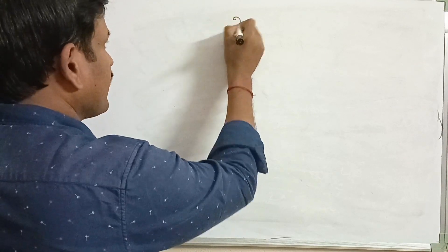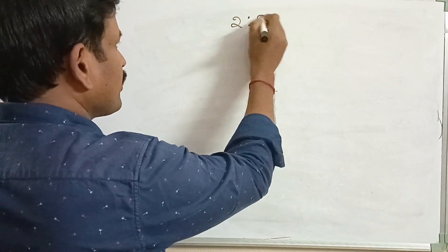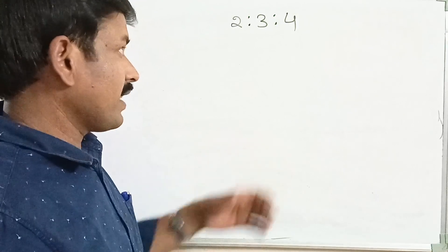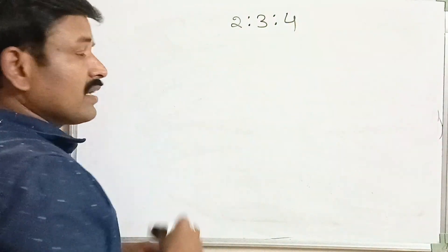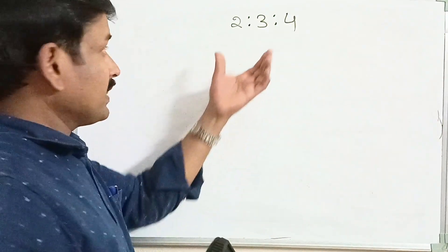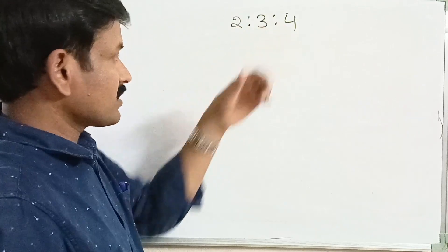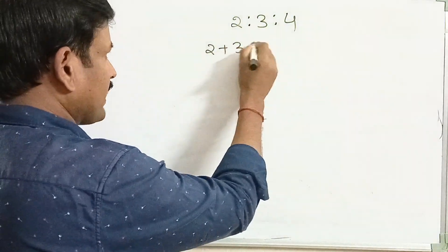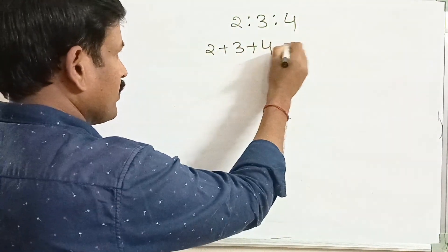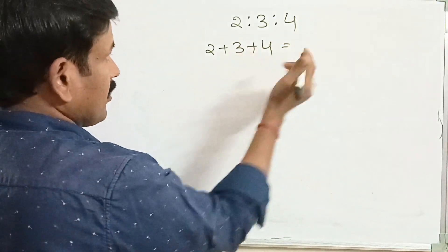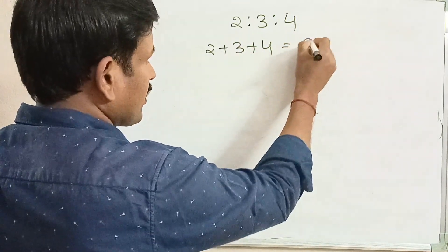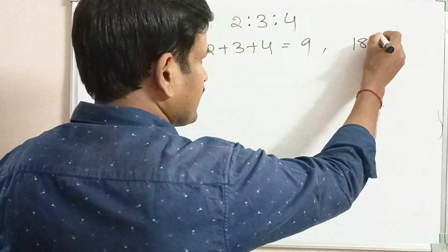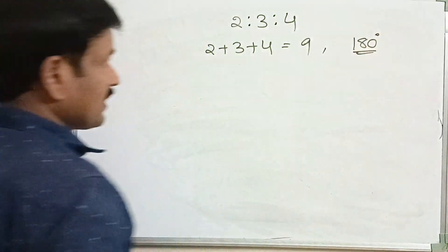Now let us move on to the next example. The angles of a triangle are in the ratio 2:3:4. Then find the measure of each angle. Given the ratio between the three angles is 2:3:4, the sum of the terms of the ratio is 2 plus 3 plus 4, which equals 9. The sum of the three angles of a triangle is 180 degrees.